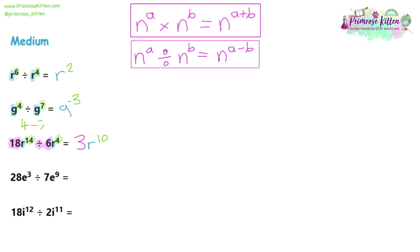Same method for question 4. Looking at normal-size numbers only — ignoring letters and powers — 28 divided by 7 is 4. Then look at the base: E on both sides, so write E. Then look at the powers: we've got 3 and 9. We're dividing, so we take the powers away: 3 take away 9 is negative 6. So the answer is 4E to the power of negative 6.